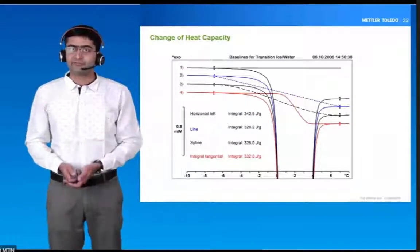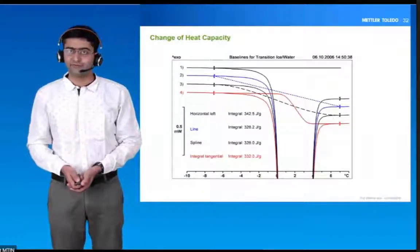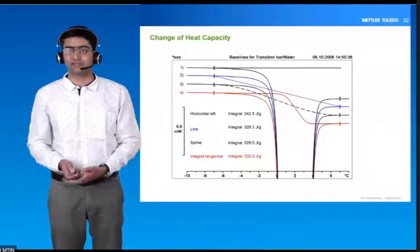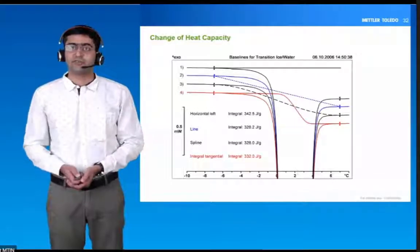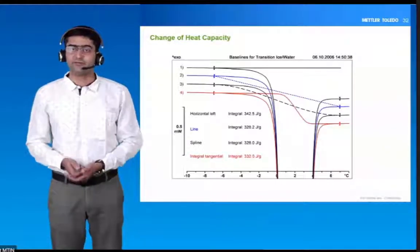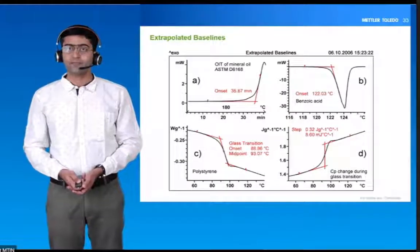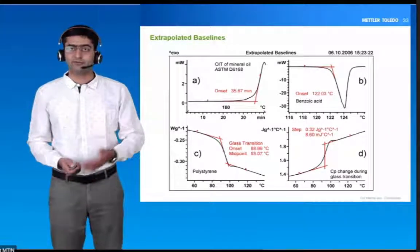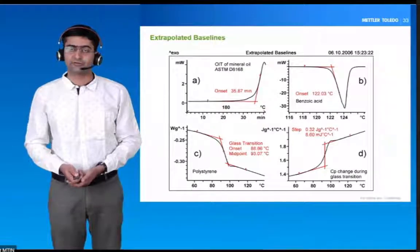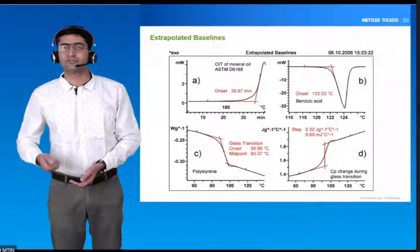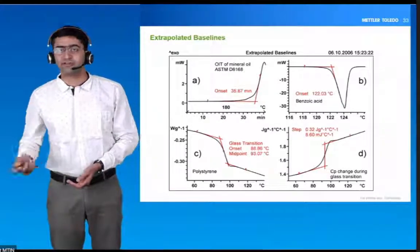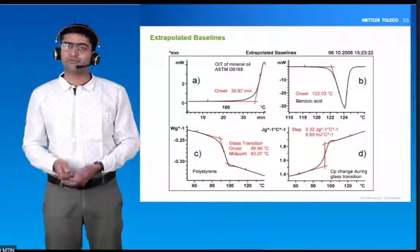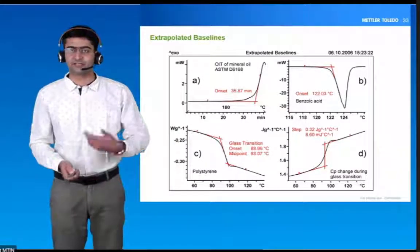What will be the effect of the baseline? For example, with the melting of water, the enthalpy value will be different if you take a different baseline — this is the effect of baseline on enthalpy value. Sometimes you also use extrapolated baselines for onset of temperature, glass transition temperature, onset of decomposition, OIT studies, or the change in CP at the glass transition event. For those kinds of analysis, we take an extrapolated baseline.